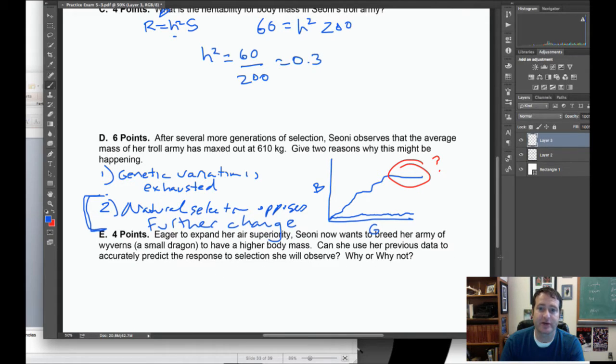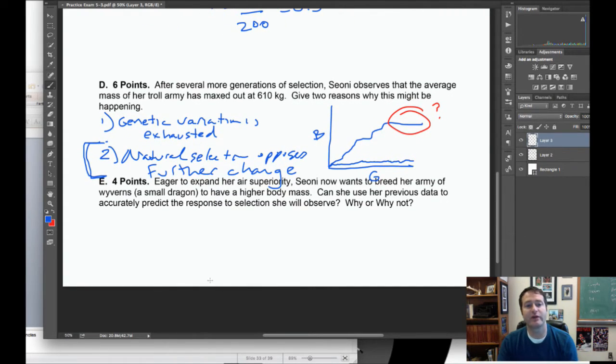Lastly we have a question that pertains to the limitations of heritability estimates. In this case the sorceress wants to expand her air superiority, so she wants to breed an army of wyverns to be bigger. The question is, can she use her previous data, specifically her estimate of heritability, to accurately predict the response to selection? The answer is no.